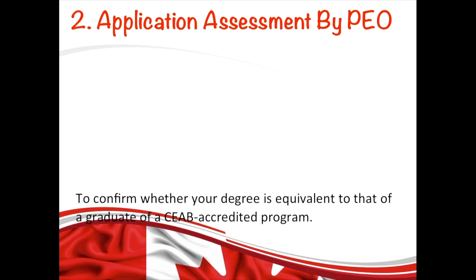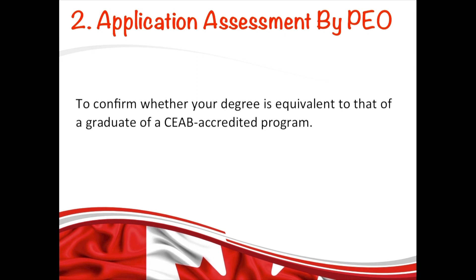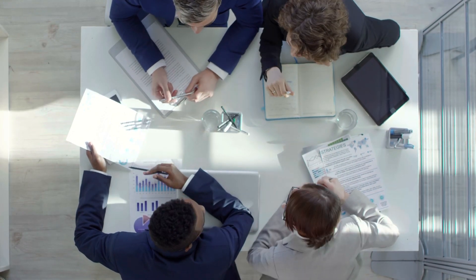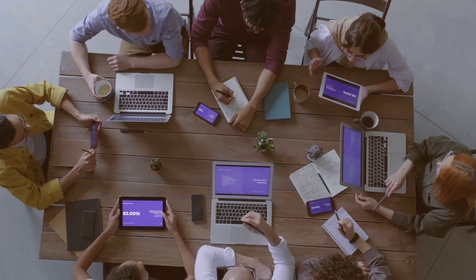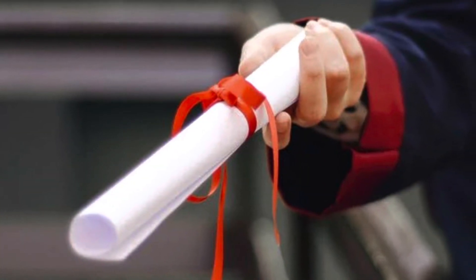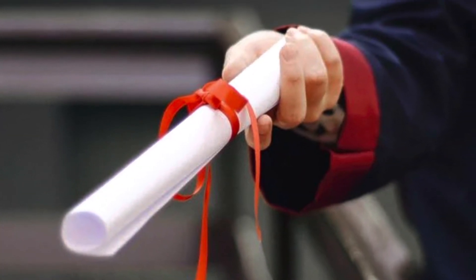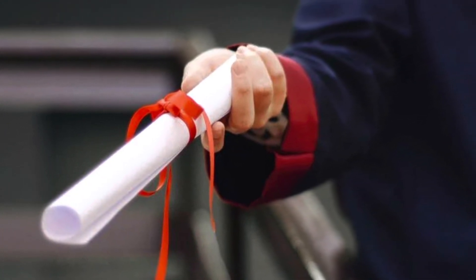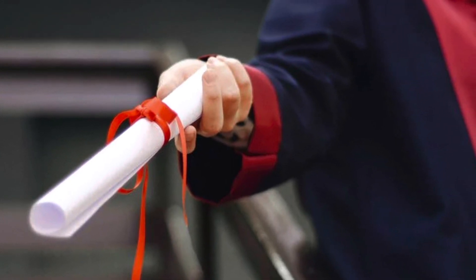The next stage is the assessment of your application by PEO. At this stage, PEO confirms whether your degree is equivalent to that of a graduate of a CEAB-accredited program. CEAB stands for the Canadian Engineering Accreditation Board, which assesses engineering education to ensure Canada's system remains among the best in the world. PEO will review your transcript and bachelor's degree to confirm whether the academic requirement has been satisfied.